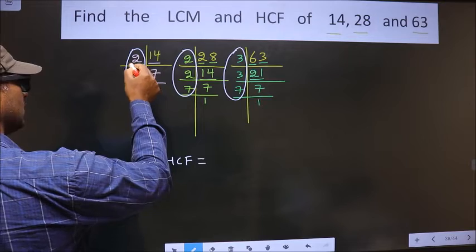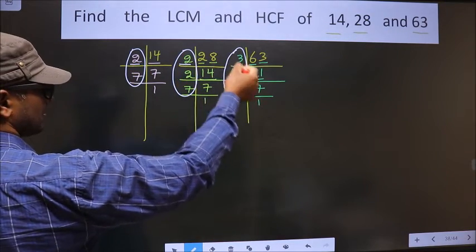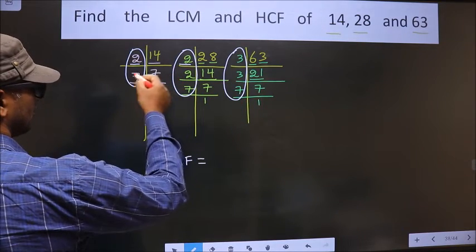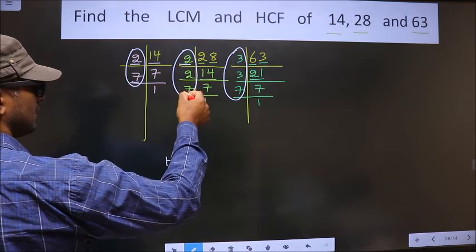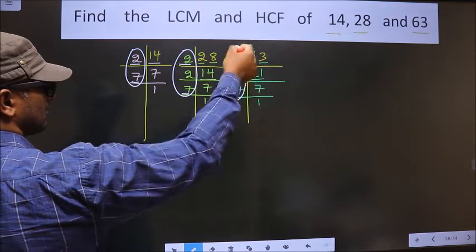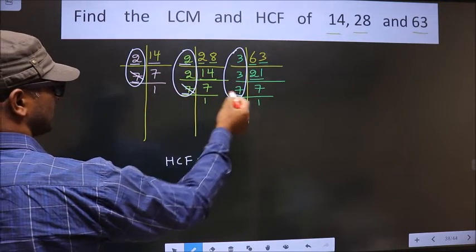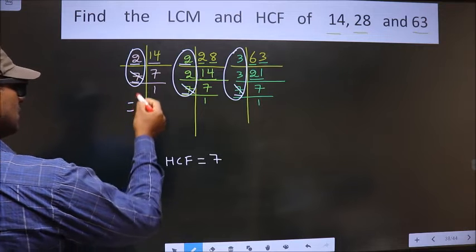Starting with the number 2. Do we have 2 here? Yes. So next place. Do we have 2 here? No. So go to the next number 7. Do we have 7 here? Yes. So next place. Do we have 7 here? Yes. So you cut 7 right here. No more numbers are left.